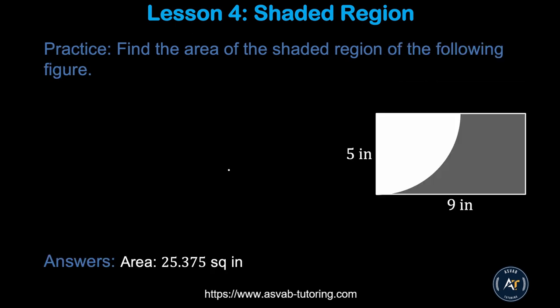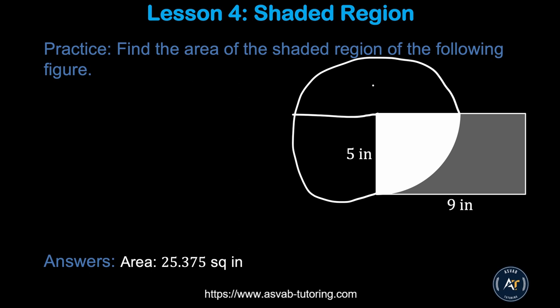Here is another practice problem. You can see one quarter of a circle with radius 5. Find the full circle area, divide by 4 to get the quarter-circle area, then find the area of the rectangle and subtract. Try it by yourself to get the final answer.